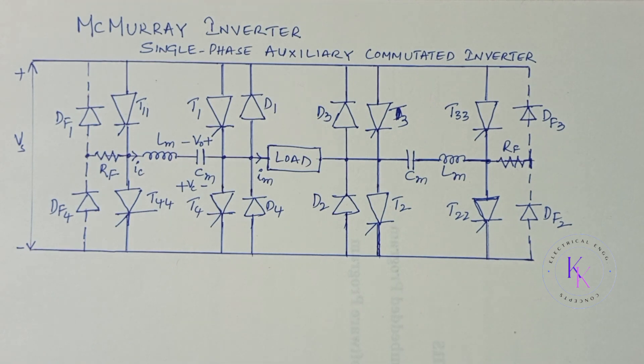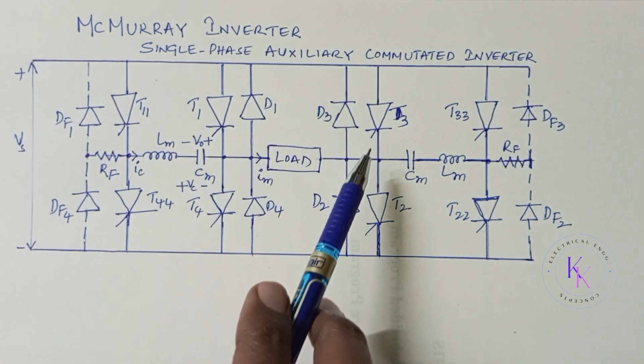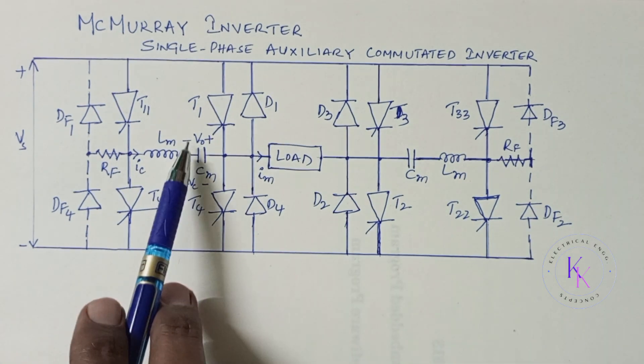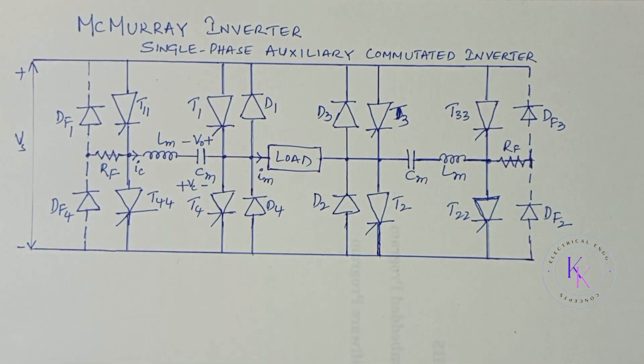When you want to get the negative output, then the supply is going to flow through T3, load, T4 back to supply. So, while changing from positive half-cycle to negative half-cycle, we need to turn off the thyristors forcefully. That turning off process is known as commutation process. Let us see how to commutate the thyristor T1 after finishing the first half-cycle.